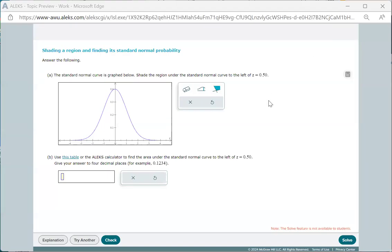In this video, I'd like to discuss the skill of shading a region and finding its standard normal probability, which is part of the Topic 5 homework. We're given a particular z-value and the standard normal curve. We would like to shade the region to the left of the z-value and then calculate the area under the curve to the left of the value.